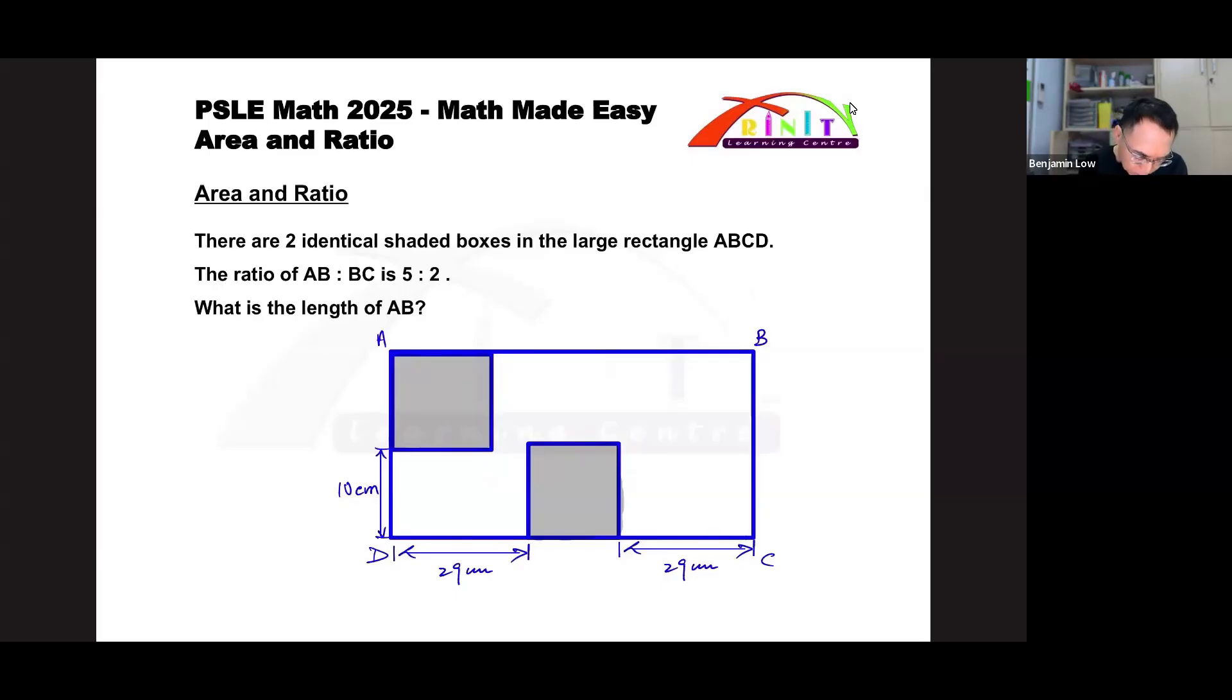Alright, so first we begin with the keywords. The keywords are that there are two identical shaded boxes as you can see in the diagram and there's a large rectangle ABCD. They also tell you that AB to BC is 5 is to 2. And the question is, what is the length of AB?